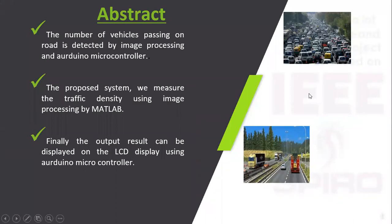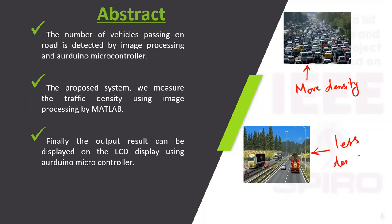In this project we are going to predict the traffic density for advanced traffic management systems using MATLAB image processing. We can see that image on the right side — this is the road density. In this project we are using MATLAB image processing in order to manage the traffic management system, and the output of the MATLAB result can be displayed on the LCD display using Arduino.